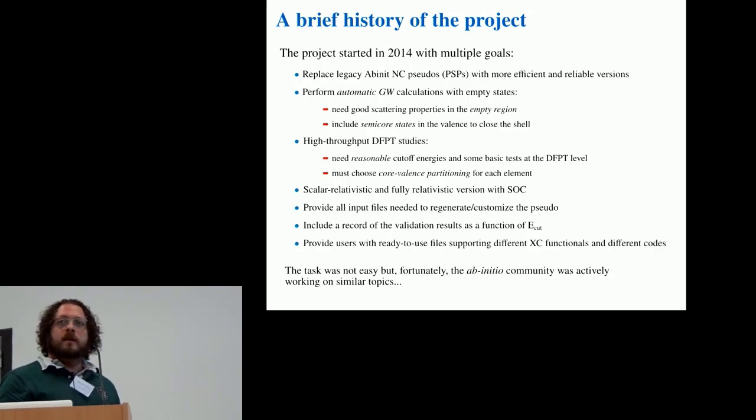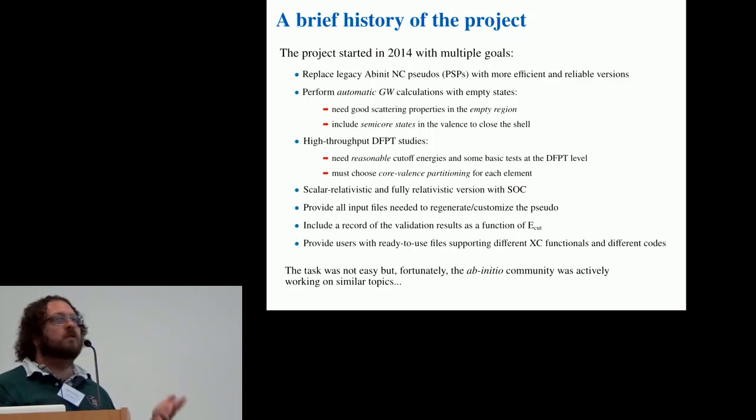Moreover, it's well known that the exchange part of the electron-electron self-energy is very sensitive to the inclusion of the semi-core states. So it was very important for us to have the possibility of including more semi-core states in the valence to improve the accuracy of the GW calculation in the norm-conserving framework.